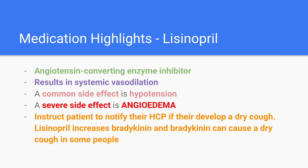Lisinopril, that ACE inhibitor ending in PRIL, results in systemic vasodilation by blocking angiotensin-1 to angiotensin-2. A common side effect is hypotension. One severe side effect specific to ACE inhibitors is angioedema — an allergic reaction where patients get swelling around their lips, mouth, and throat, which can cause anaphylaxis. Instruct patients to notify their healthcare provider if they develop a dry cough, as lisinopril increases bradykinin, which can cause a dry cough. If they do develop a cough, they will likely be switched to another blood pressure medication.